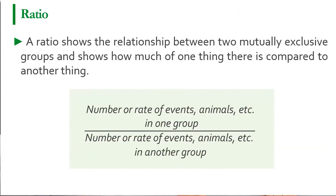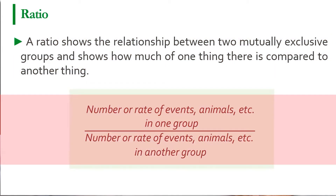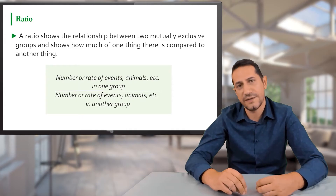Ratios are measures used to compare two values to each other. They express a relationship between two mutually exclusive groups. The formula is: the number or rate of disease events in one group divided by the number or rate of events in another group.